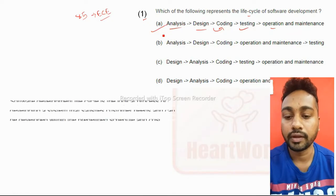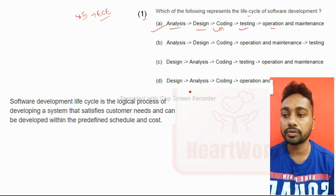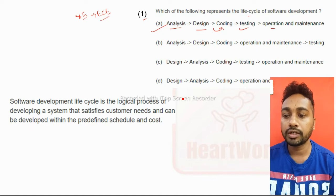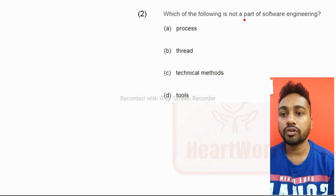After that it will operate or will give maintenance, so option A is the right answer. Software development life cycle is the logical process of developing a system that satisfies customer needs and can be developed within predefined schedule.